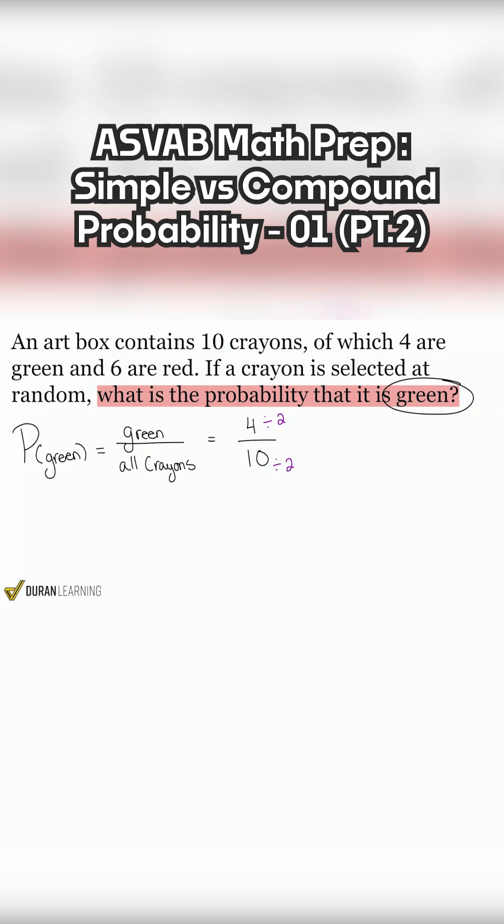Everyone, 4 and 10 are both divisible by what? Correct, both divisible by 2. So we'll do that. 4 divided by 2 and 10 divided by 2. 4 divided by 2 gives us 2, and 10 divided by 2 gives us 5. So the correct answer here will be 2/5 or two-fifths.